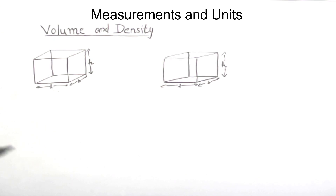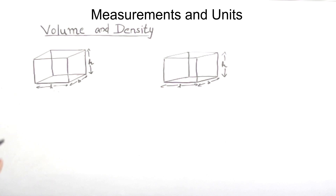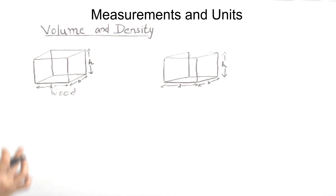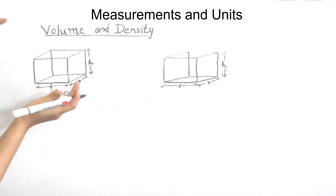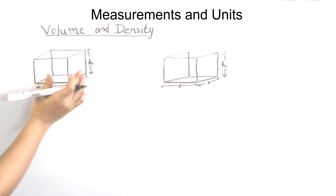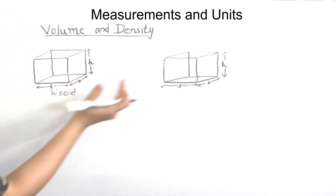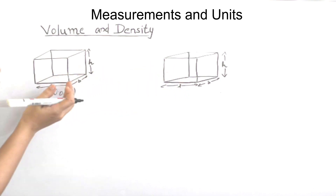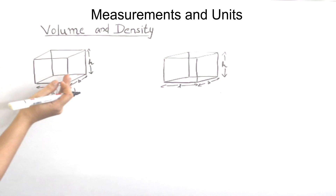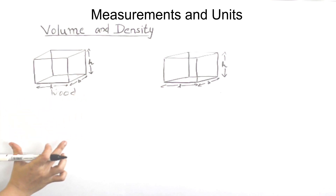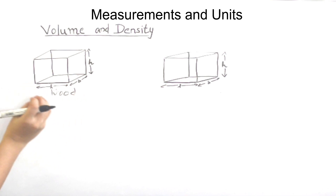Density is mass by volume, with unit kilogram per meter cube. In thermo-col, there are air gaps and the particles are not as tightly packed, so its mass is lower for the same volume. This is why wood has a higher density and sinks compared to thermo-col.